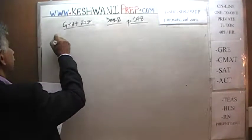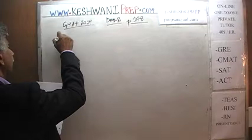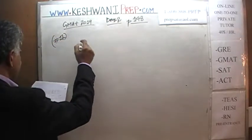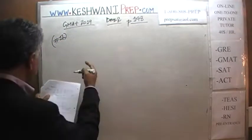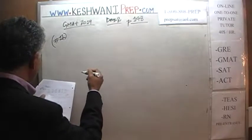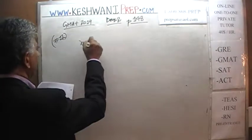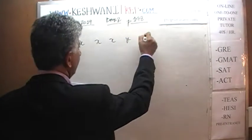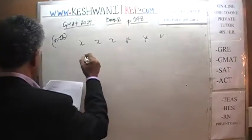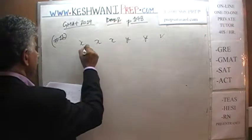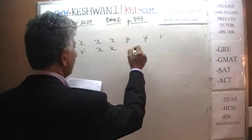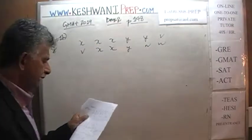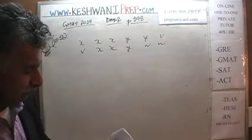Number 12. In number 12, we are given the following sequence: x, x, x, y, y, v, x, x, y, y, v, v, x, x, y, w, w. I hope I did not make a mistake.